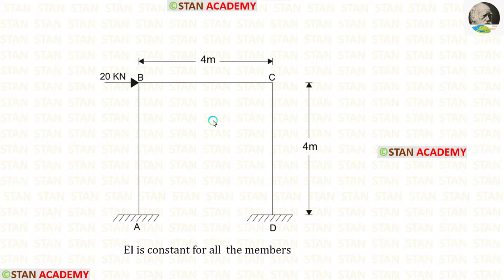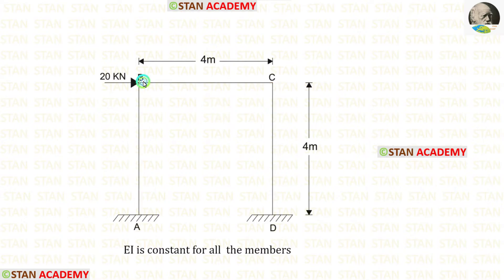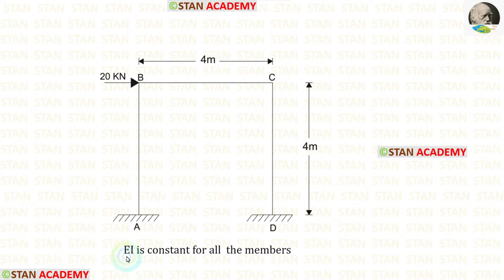In this frame, there are two columns: column AB and column CD. Also, there is a beam BC. At point B, there is a nodal point load of 20 kN. This load is acting towards the right side. The height of the columns is 4 meters. The length of the beam is also 4 meters. The flexural rigidity EI is given as constant for all members.